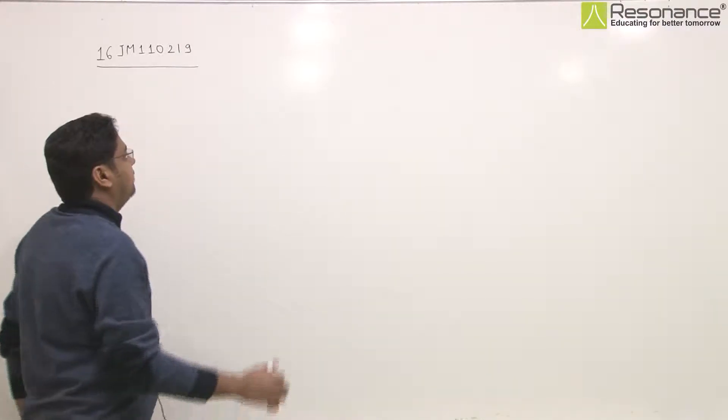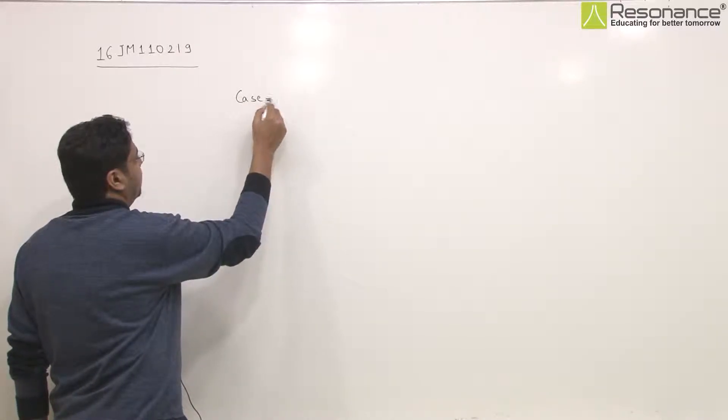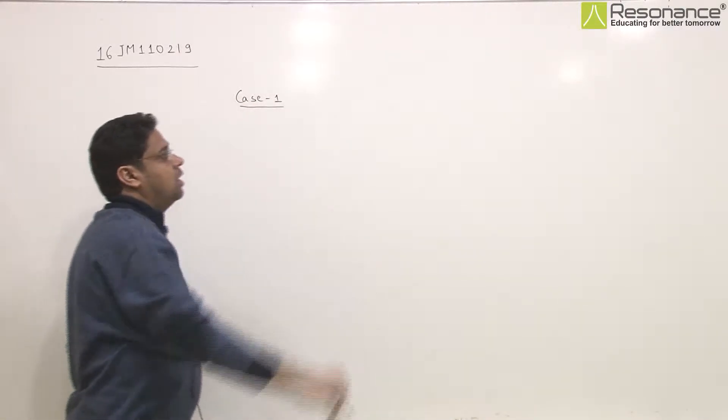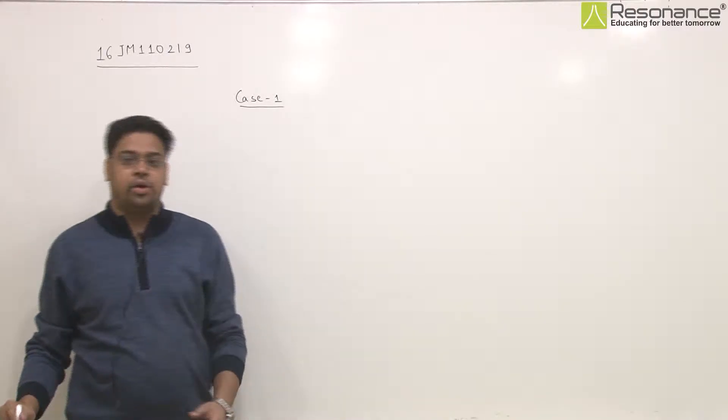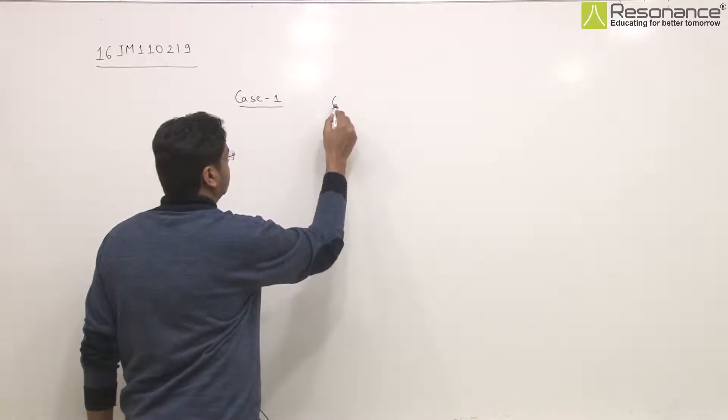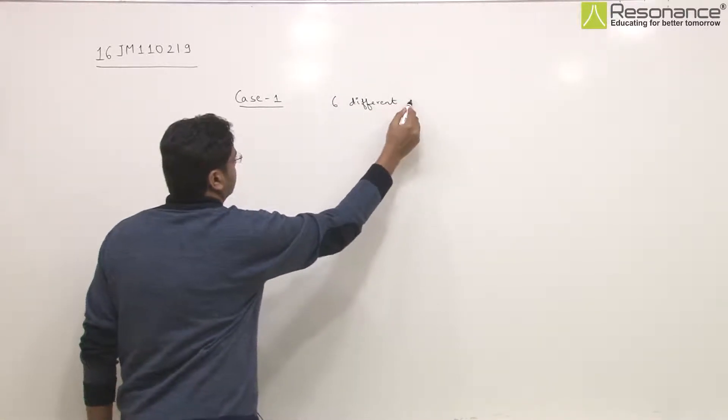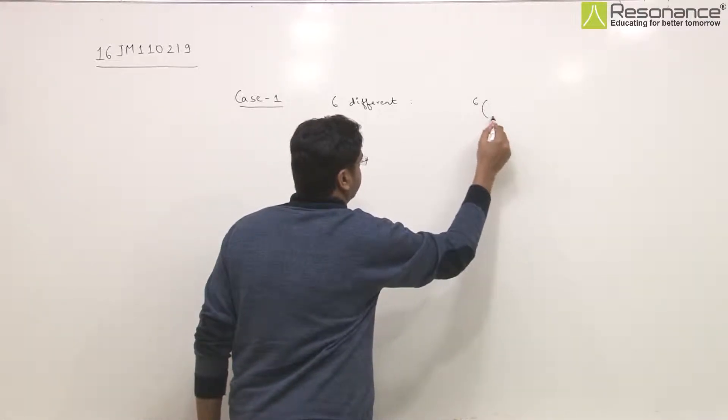Okay, so in this problem we have to choose three balls, but the content in the bag is not specifically known. So we have made three cases for the content of the bag. In the first case, there are 6 different balls in the bag. So for removing three balls, it is 6C3.